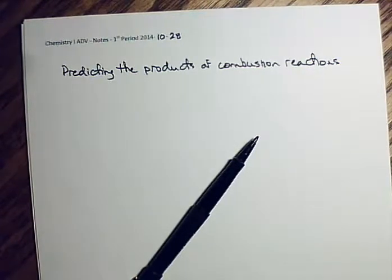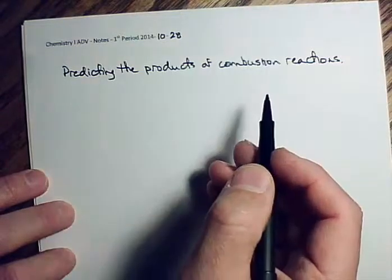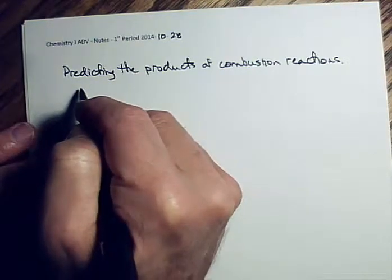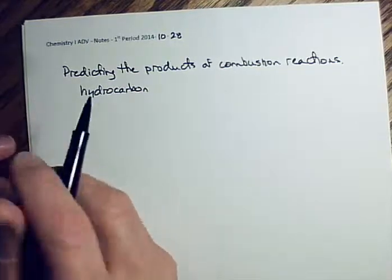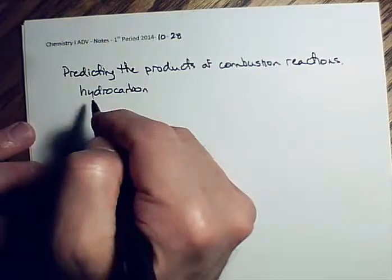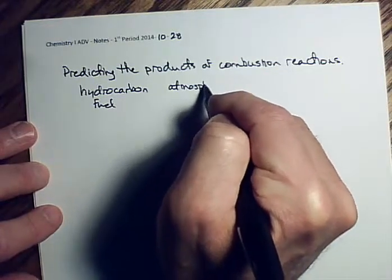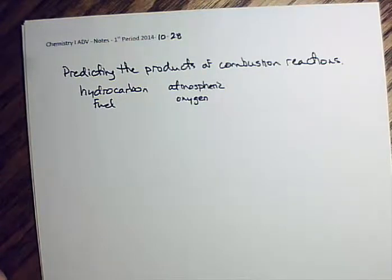Combustion reactions start with some kind of hydrocarbon fuel — in this high school class, we start with a hydrocarbon. In the last unit we learned to name hydrocarbons, so you should be able to write formulas from names. We react that hydrocarbon fuel with atmospheric oxygen, O₂. There's also ozone O₃ and atomic oxygen O, but atmospheric oxygen is O₂.